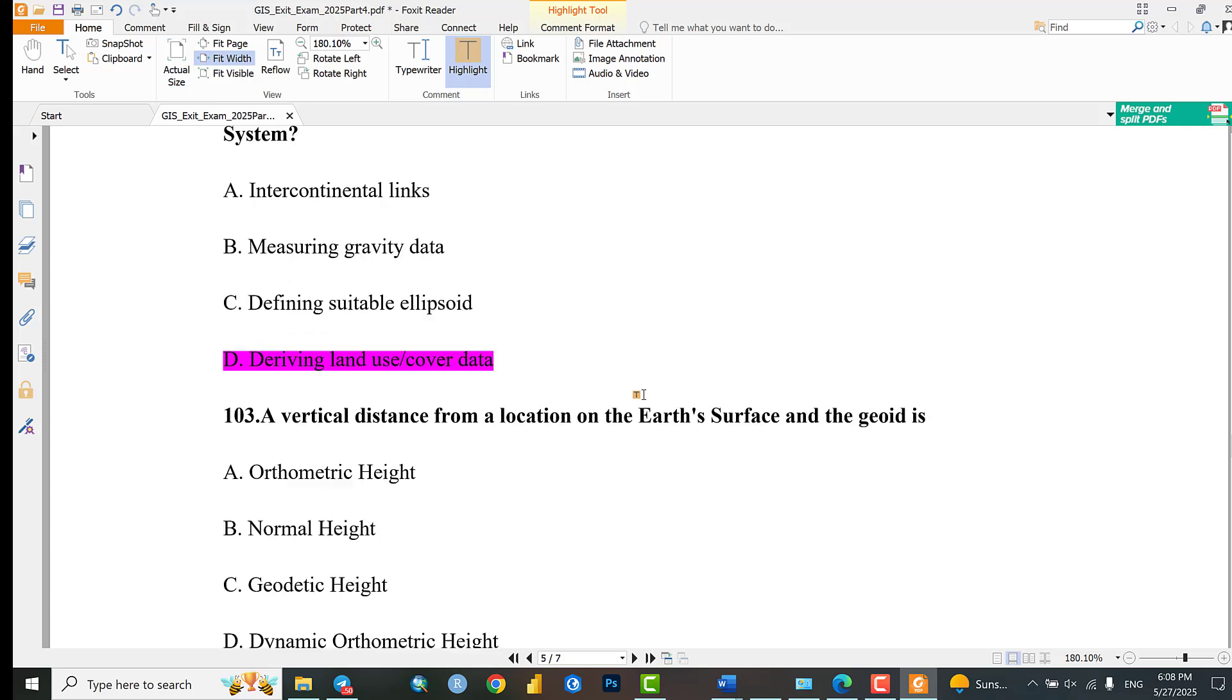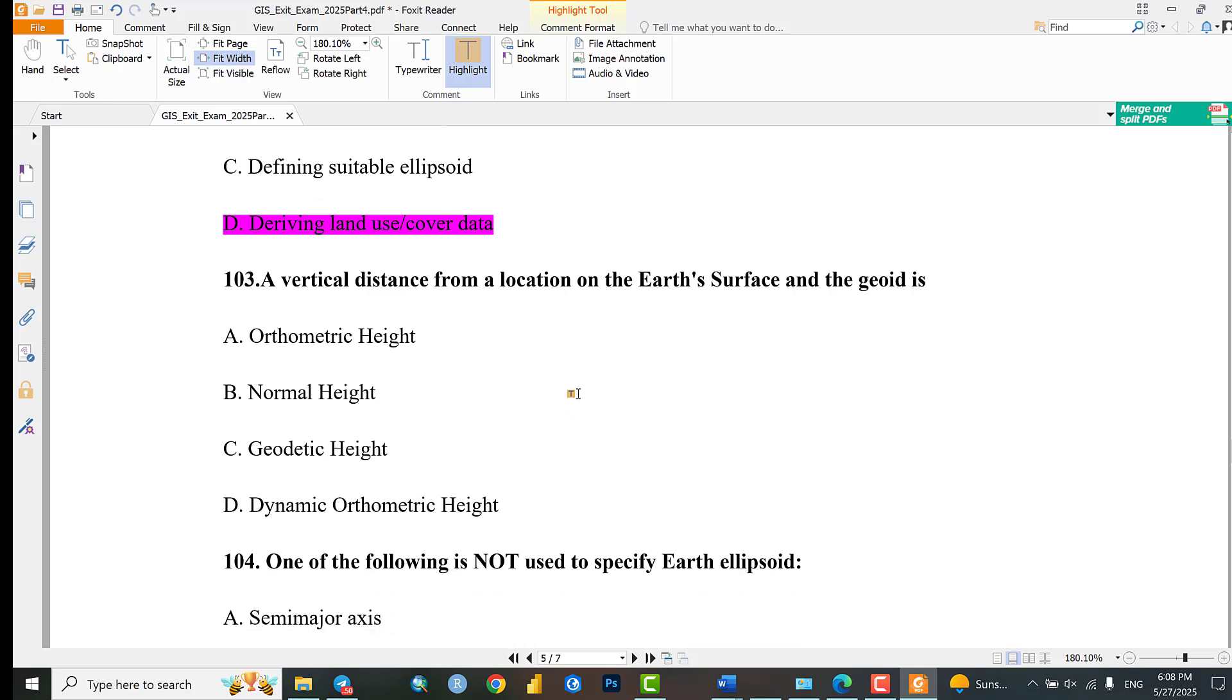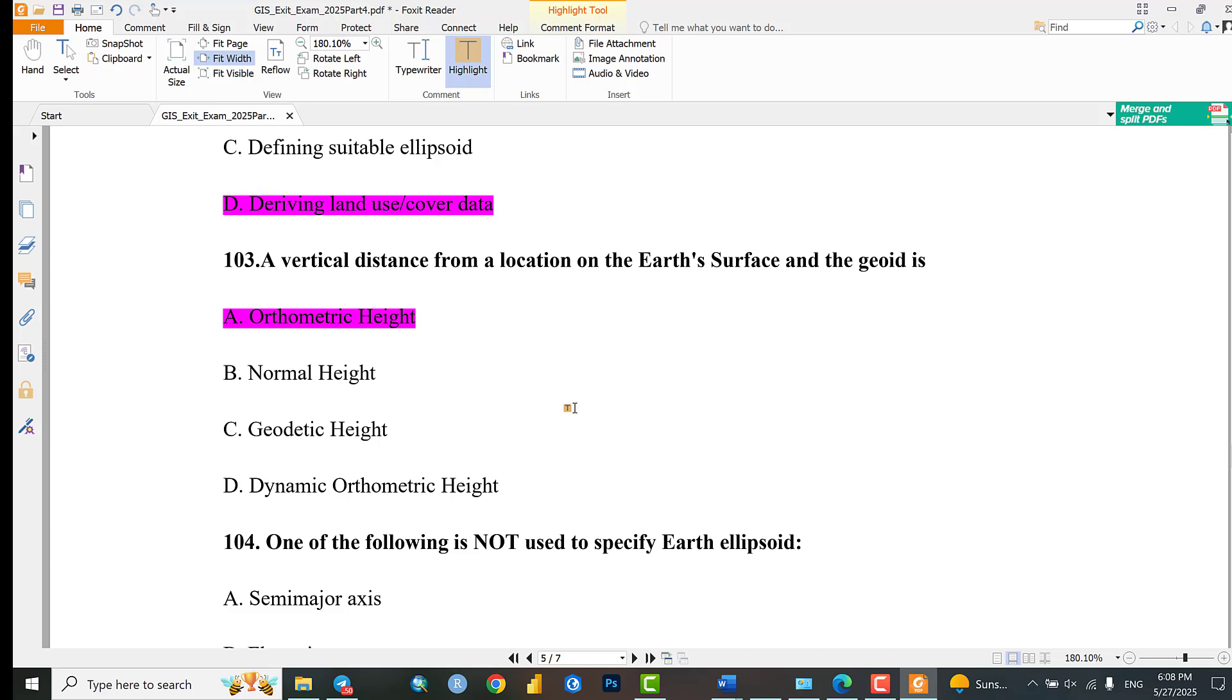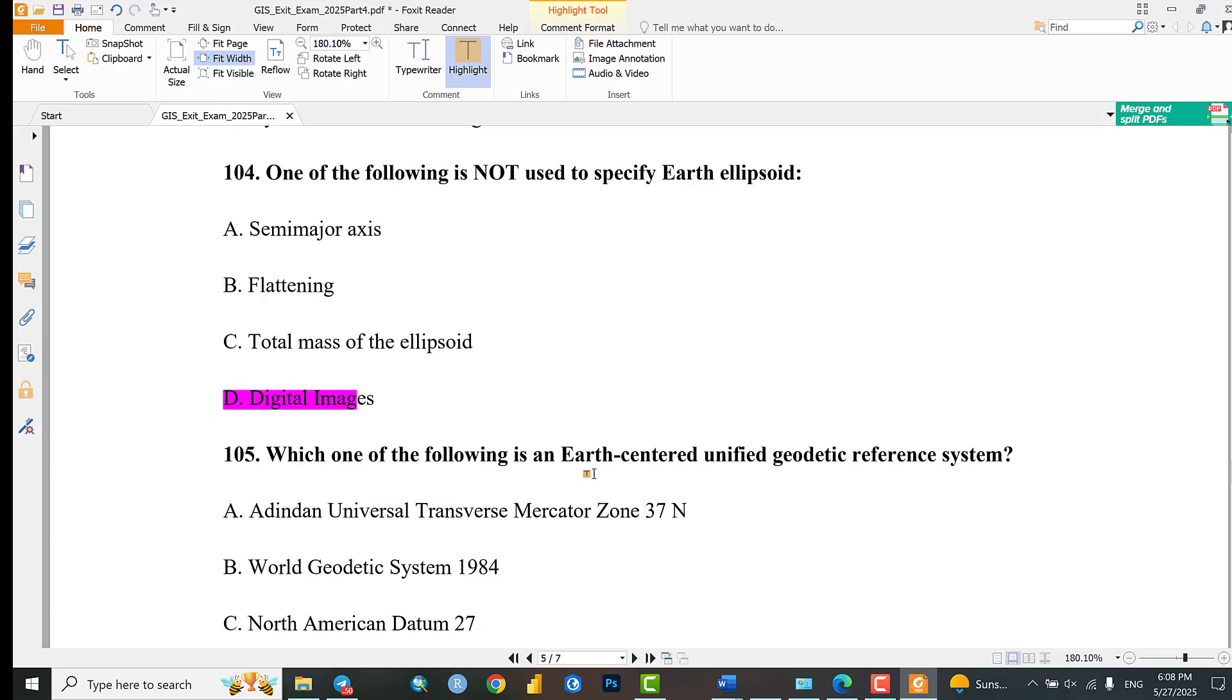Question 103: A vertical distance from a location on Earth's surface and the geoid is: Orthometric height, normal height, geodetic height, or dynamic orthometric height? The answer is orthometric height. Question 104: Which one of the following is not used to specify the Earth's ellipsoid? Semi-major axis, flattening, total mass of the ellipsoid, or digital images? Digital images are not used to specify the ellipsoid.